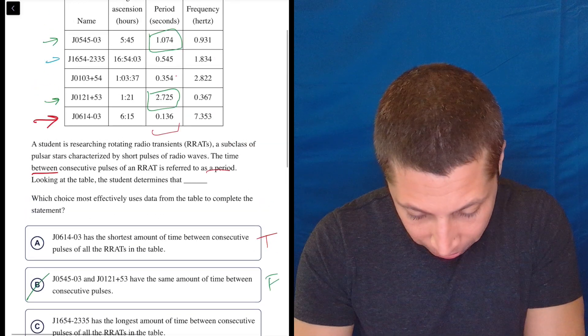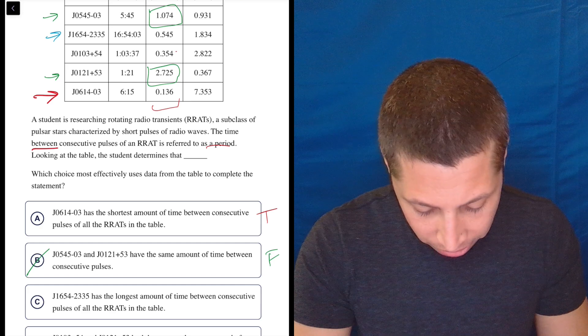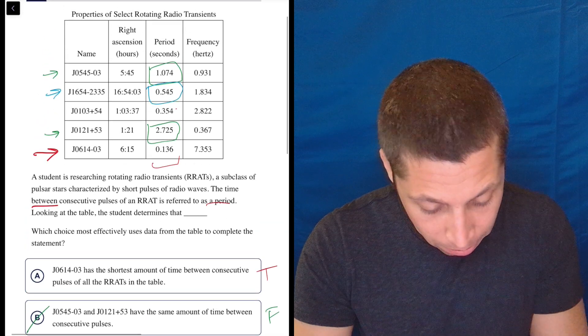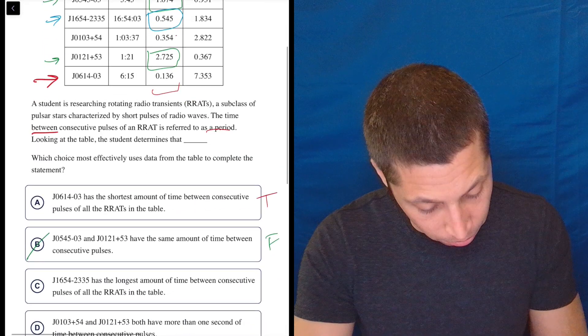1654. Oh my god, I hate this. Has the longest amount of time between consecutive pulses. So, is this the biggest number? No. Not even close. So, false.